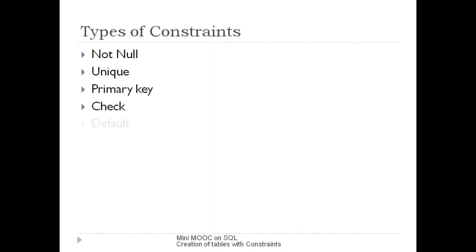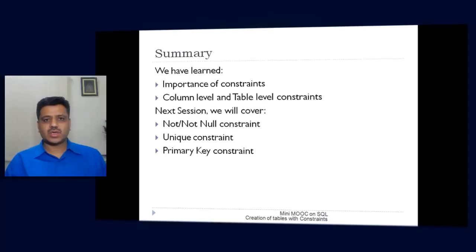DEFAULT, and FOREIGN KEY constraint. Now let us summarize the concepts we have learned in this session. In this session, we understood the importance of constraints on a table. We discussed its two types: column level and table level constraints. We also discussed different types of constraints like NOT NULL, UNIQUE, PRIMARY KEY, CHECK, FOREIGN KEY, and DEFAULT constraint. In